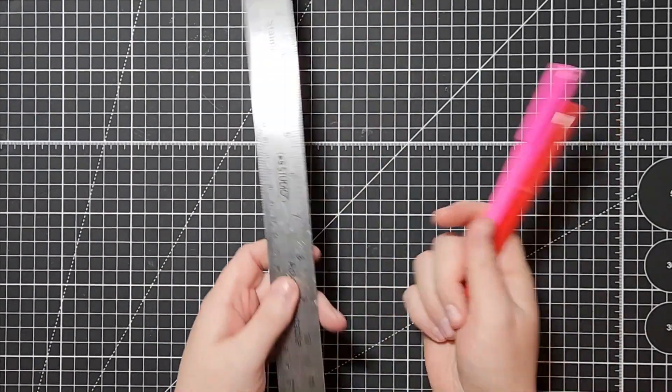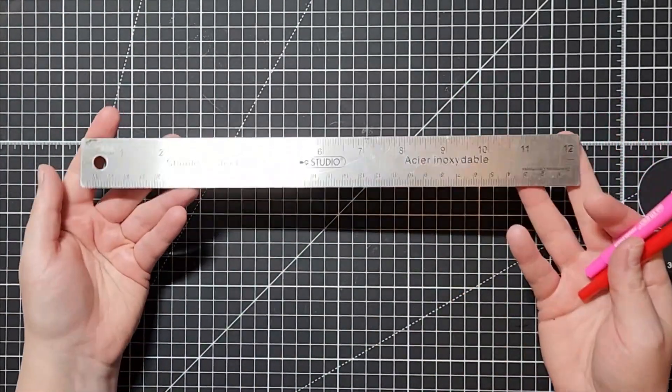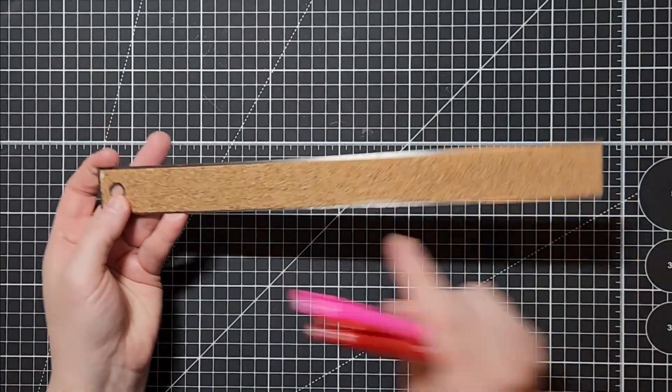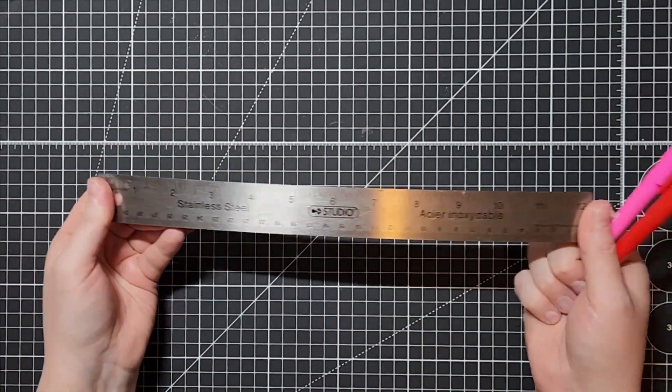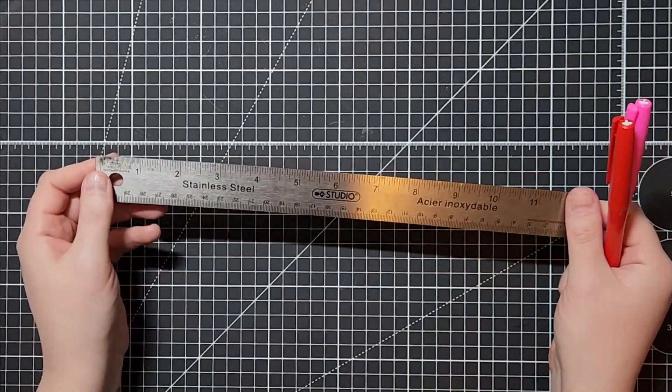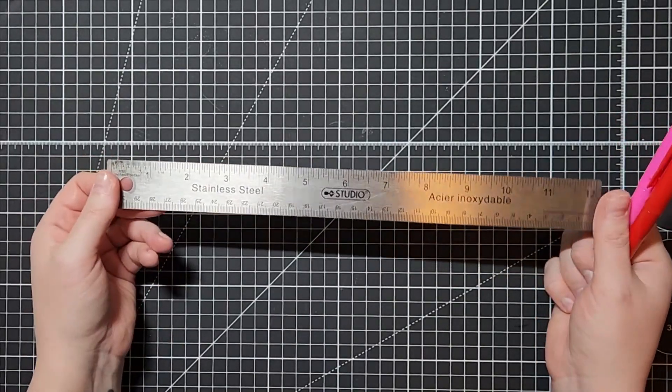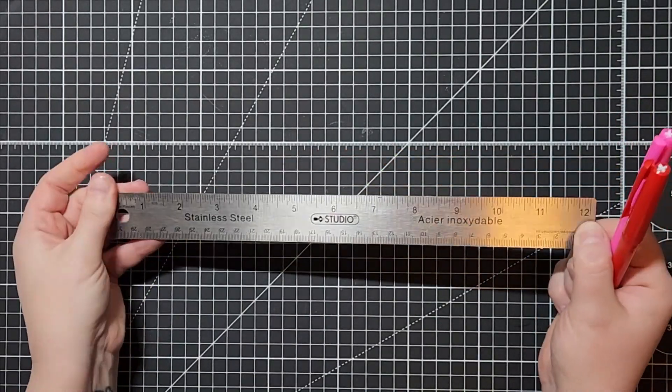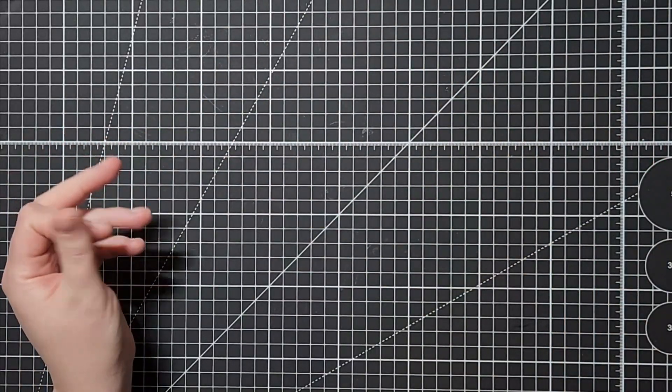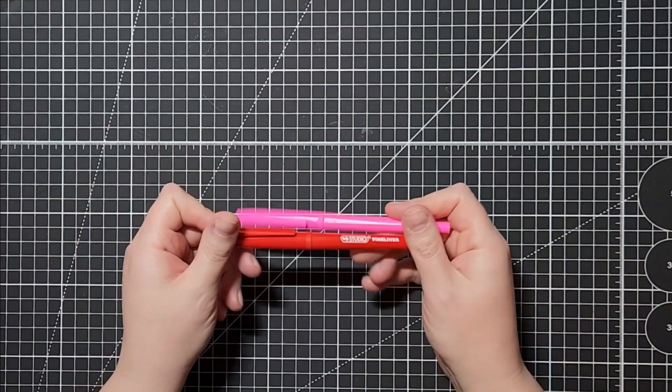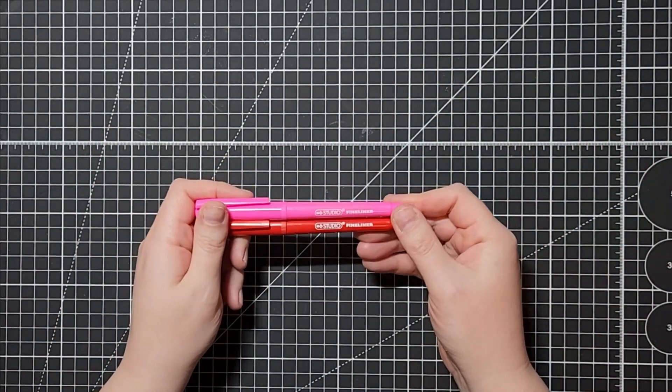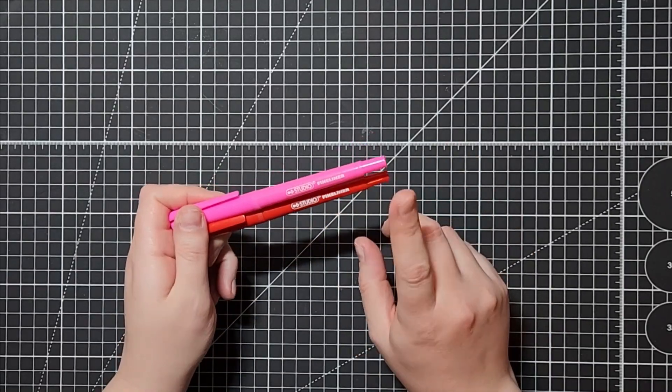My next section I'm going to go through is the stationary section and I have a ruler. It's a metal ruler too with a cork backing so it's anti-skid. This is from the Studio brand that Dollarama sells. It's pretty handy to have, so you get yourself one of these for a couple bucks.